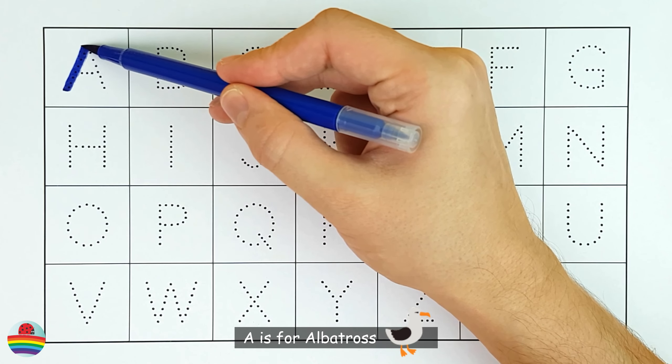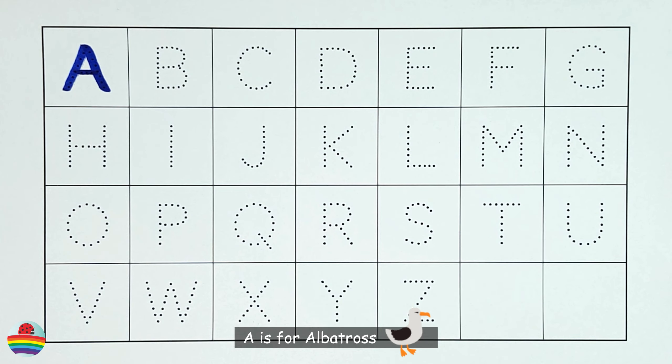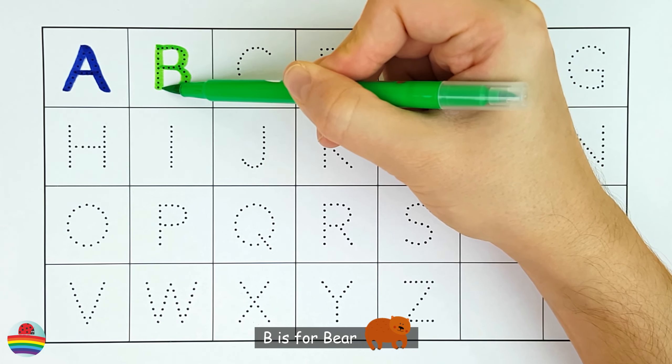A. A is for albatross. A. B. B is for bear. B.